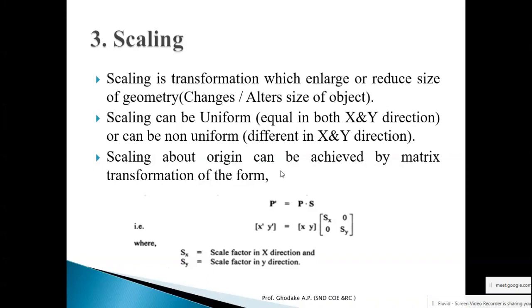Scaling about the origin is achieved by the matrix transformation P' = P · S, where S is the scaling transformation matrix [[SX, 0],[0, SY]]. Here SX is the scale factor in the x-direction and SY is the scale factor in the y-direction.